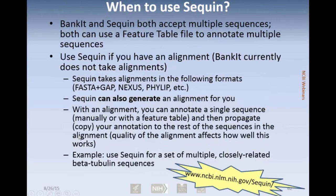One of the questions is when do you want to use Sequin? Both BankIt and Sequin will accept multiple sequences. You can use a feature table file to do that. But you want to use Sequin if you already have an alignment. BankIt does not take alignments, and the formats that are accepted in Sequin are listed there. Sequin can also generate an alignment for you.